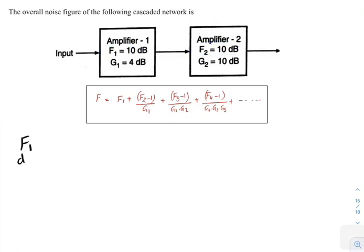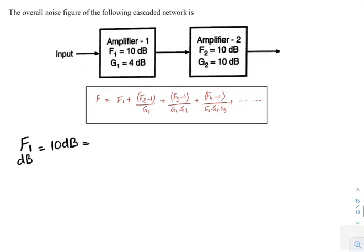Noise figure F1 in decibels is given, that is 10 dB. If you want noise factor, then it is equal to 10 times log base 10 of F1, where F1 is noise factor. That implies F1 equals 10. 10 will get cancelled, remaining is 10 power 1. Therefore, F1 equals 10.